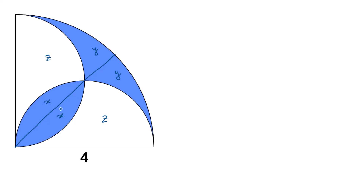Now our job is to find the area of this x and this x — twice x — and this y and this y. So we have to find the area of twice x plus twice y.